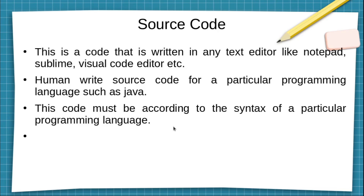The source code is a code written in any text editor like Notepad, Sublime, Visual Studio Code, etc. A human writes source code for a particular programming language such as Java. This code must be according to the syntax of a particular language — every language has its own grammar rules and regulations that we have to follow; otherwise the compiler will show an error.